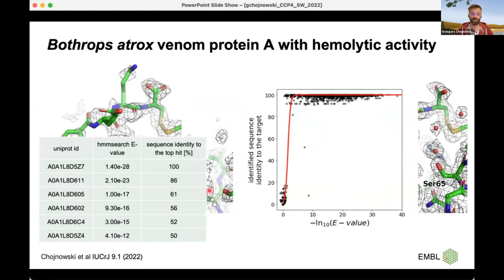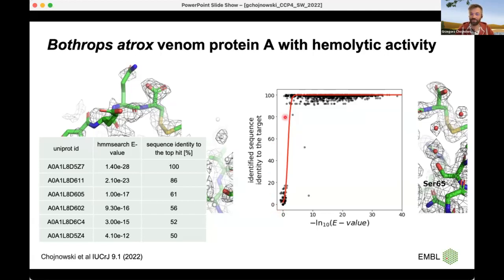Another important feature of this experiment is that there's not only one protein of this homolog in the venom — there are actually six of them, with quite a wide range of mutual sequence identity. The top hit identified using FindMySequence had to be carefully validated against the data. It turned out that the score assigned by HMMER within the FindMySequence pipeline was a very accurate estimate of the quality or similarity of the hit to the actual structure. This is a quite important feature related to how the neural network works — it's very reliable.